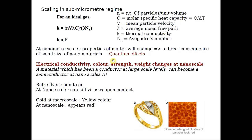Now we will see a few examples of how properties change at nanoscale. Electrical conductivity, color, strength, and weight all change at nanoscale. A material which would have been a conductor at large scale can become a semiconductor at nanoscale. For example, some bulk silver is actually non-toxic, but when you bring it to nanoscale, it becomes very toxic and can even kill viruses upon contact.